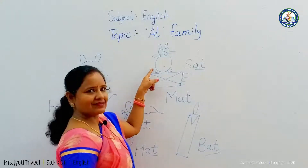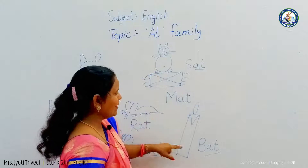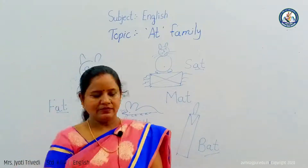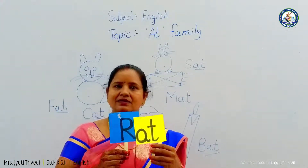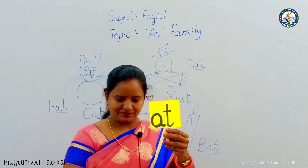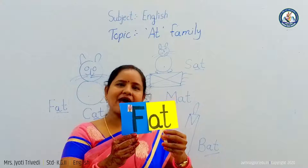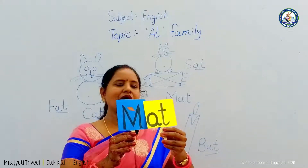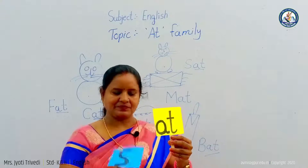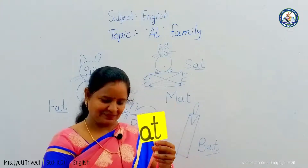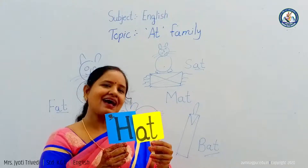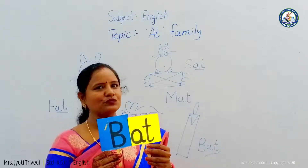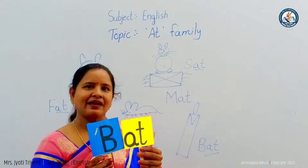Mat means chatai. S-AT: sat. Sat means to sit. B-AT: bat. Bat means balla. Students, see the flashcard: rat, fat, cat, mat, sat, hat, bat. The flashcard is very useful to learn alphabets and sentences.